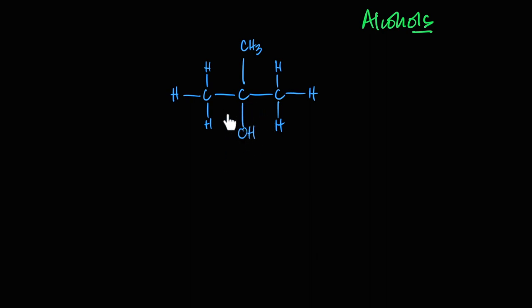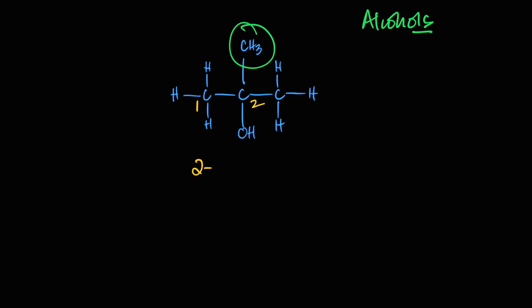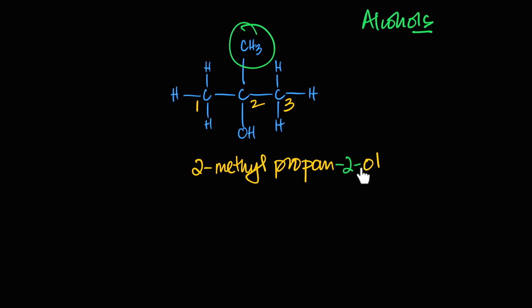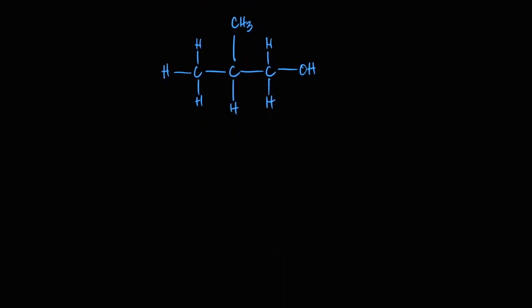Looking at this compound: the OH gets numbering preference. From both sides, the OH is on carbon number two — it's a symmetrical molecule. So it'll be carbon one, two, three — a three-carbon chain, 'prop.' All carbon-carbon bonds are single, so '-an.' The OH is on carbon two, so it ends in '-2-ol.' With the methyl substituent also on carbon two, the name is 2-methylpropan-2-ol.